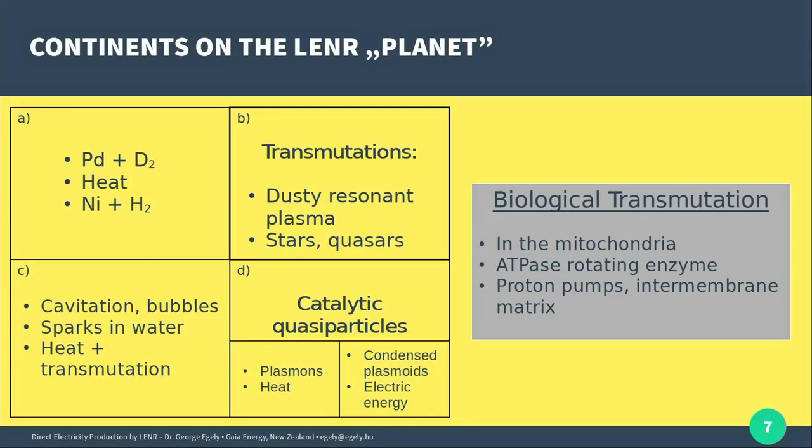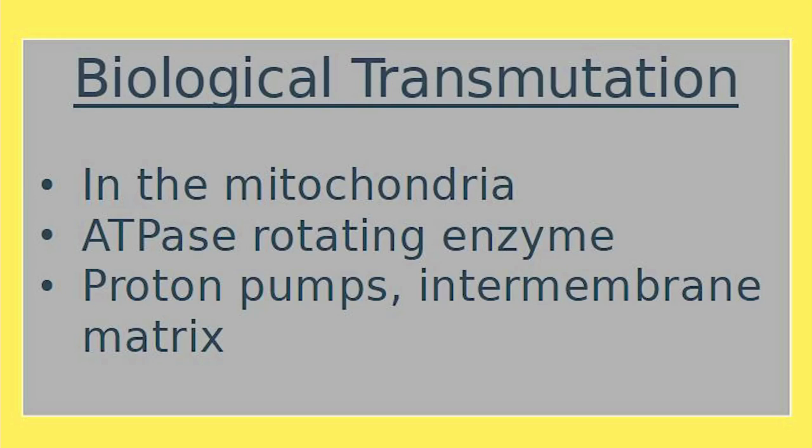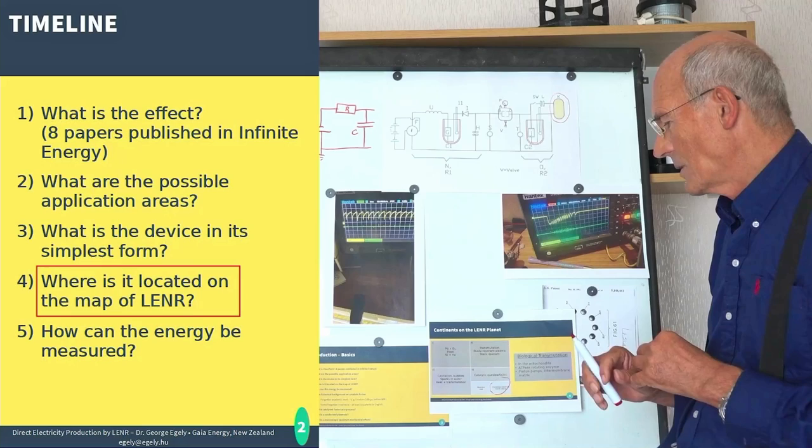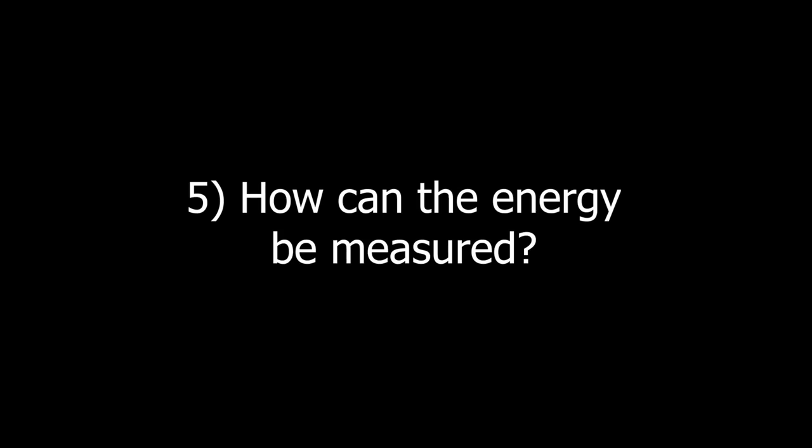And the fifth area is biological transmutation, and it is hotly debated, known for 200 years, and it is fully banned.